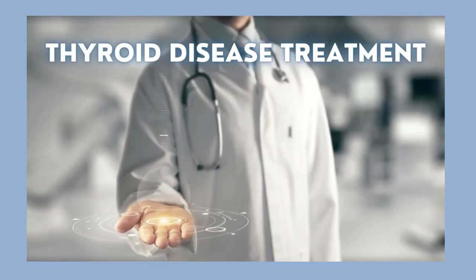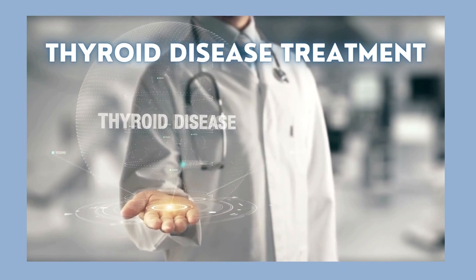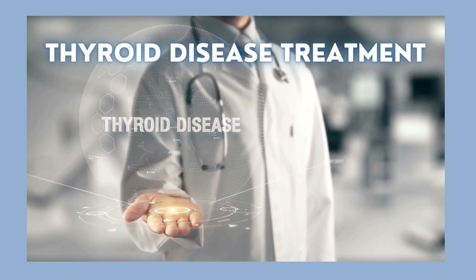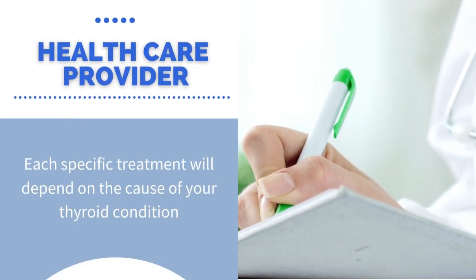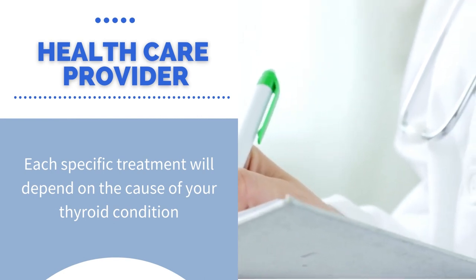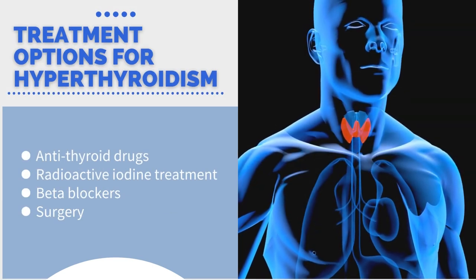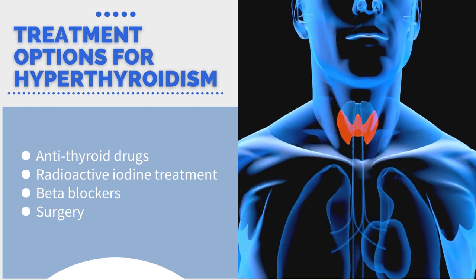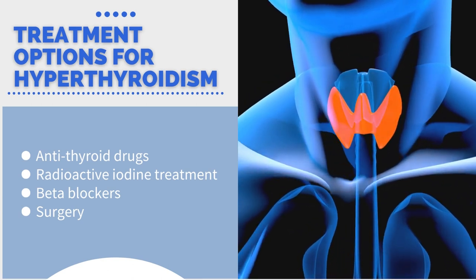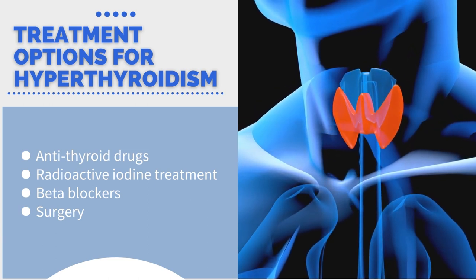Your healthcare provider's goal is to return your thyroid hormone levels to normal, and this can be done in a variety of ways. Each specific treatment will depend on the cause of your thyroid condition. Treatment options for hyperthyroidism can include antithyroid drugs that stop your thyroid from making hormones, radioactive iodine treatment, and beta blockers — medications that don't change the level of hormones but help control your symptoms.